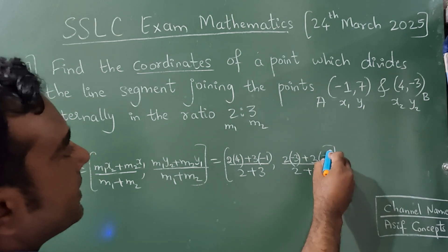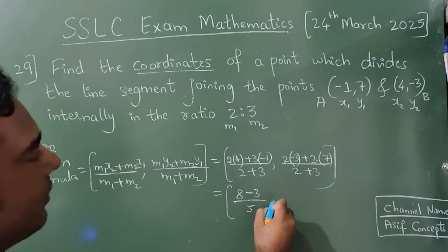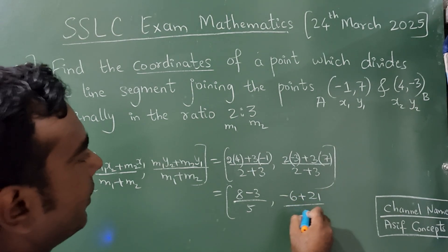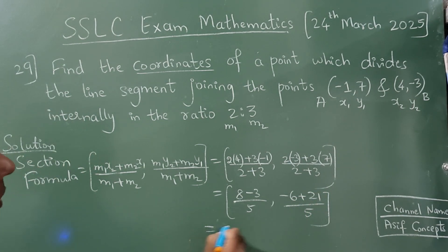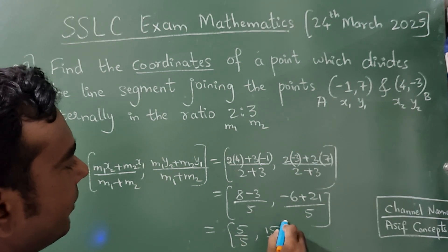What is y1? It is 7. 4 times 2 is 8 minus 3 divided by 5, and this is minus 6 plus 7, 3 times 7 is 21 divided by 5. Now this is 5 by 5 and this is 15 by 5.